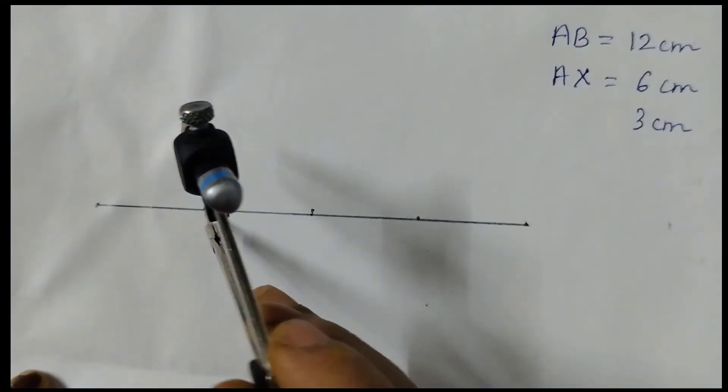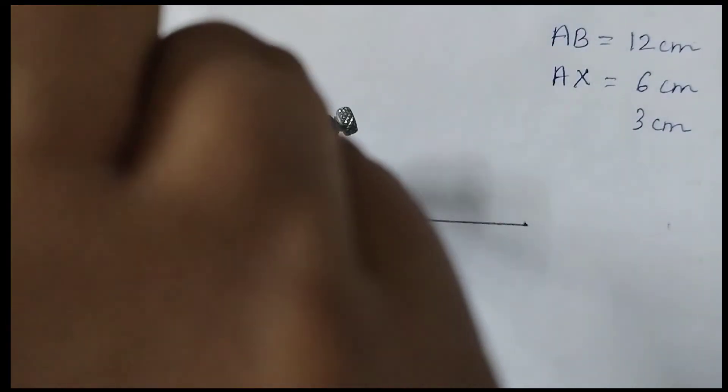Then we will keep the metal point and draw a semicircle. See here? It's coming to this point. It's so easy to do. Just you need to do little bit of calculation before you start.